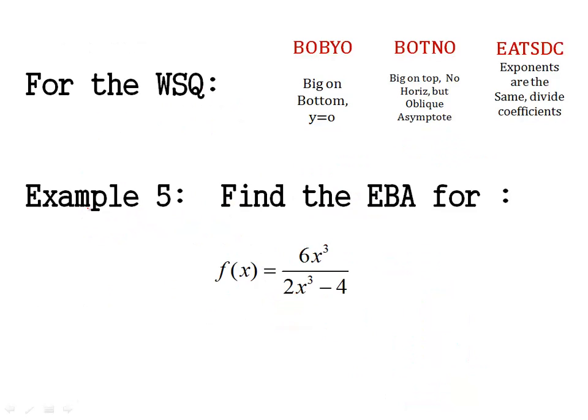Alright, your turn. For the quiz, I want you to tell me what is the end behavior asymptote for this. Use BOBYO BOTNO EATSDC to help you find it.